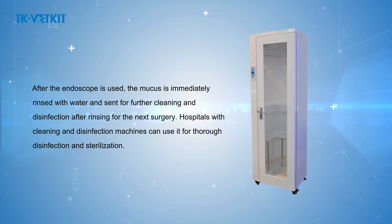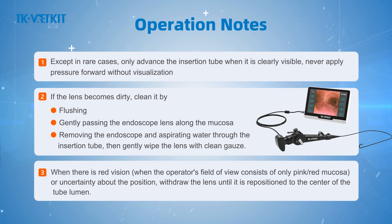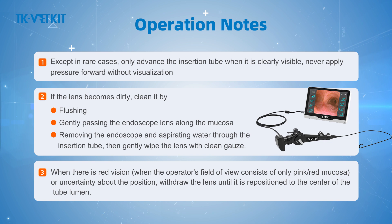Operation notes: First, except in rare cases, only advance the insertion tube when it is clearly visible — never apply pressure forward without visualization. Second, if the lens becomes dirty, clean it by flushing gently, passing the endoscope lens along the mucosa, removing the endoscope, aspirating water through the insertion tube, then gently wiping the lens with clean gauze. When there is red vision — where the field of view consists only of pink or red mucosa — withdraw the lens until it is repositioned to the center of the tube lumen.